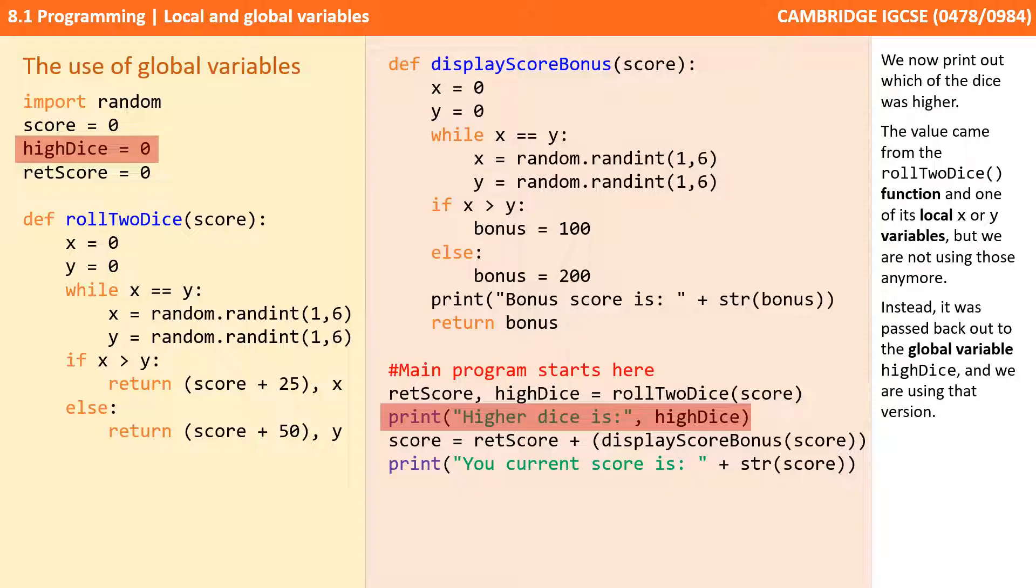We now print out which of the dice was higher. The value came from the roll2dice function and one of its local x or y variables, but we are not using those anymore. Instead, it was passed back out to the global variable highDice and we're using that version.